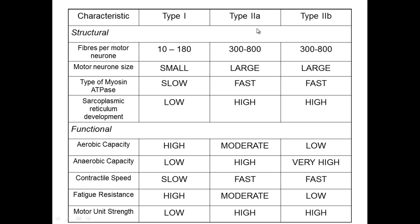You can physically interchange between type 2a and type 2b. However, you cannot interchange between fast and slow twitch fibers. So if you're born with a proportion of slow twitch fibers, you can't turn those into fast twitch. Likewise, you can't turn fast twitch into slow twitch. But you can convert between type 2a and type 2b.